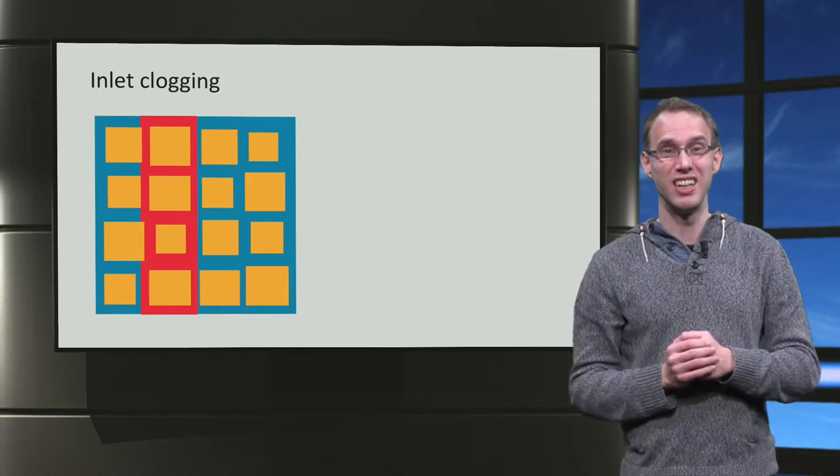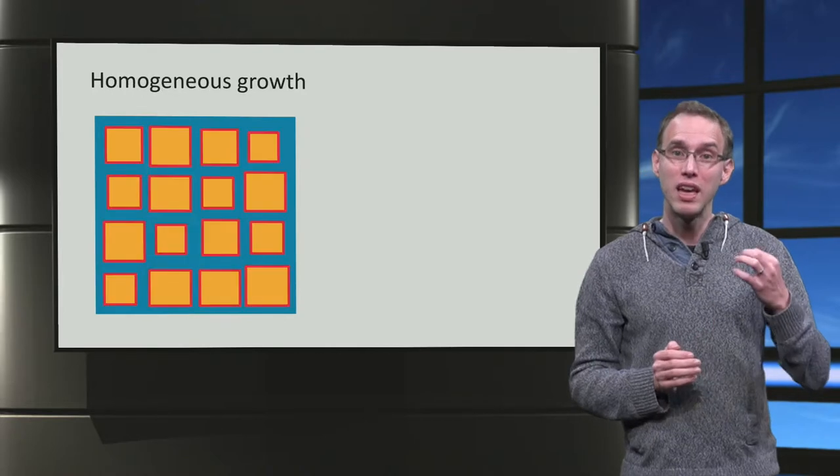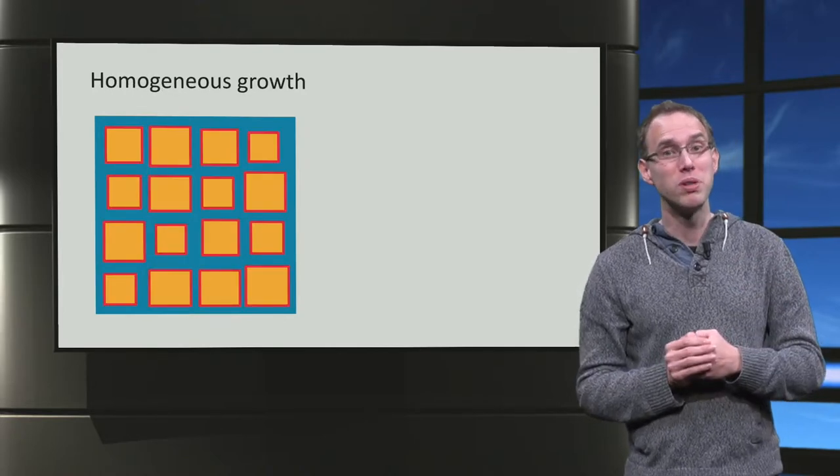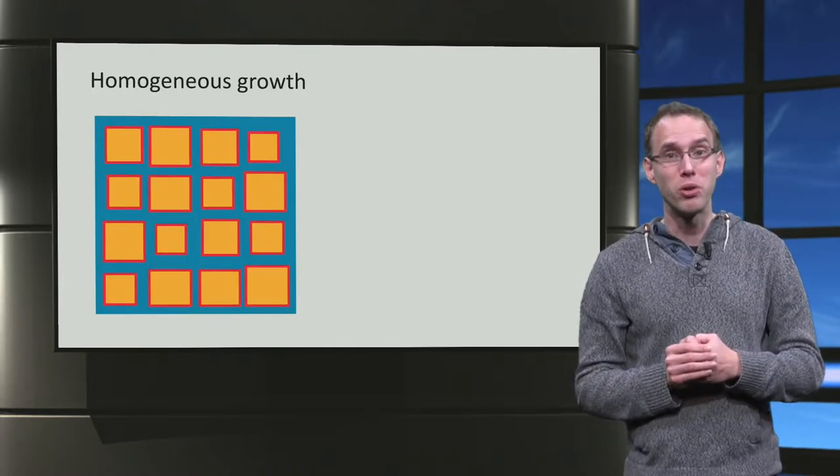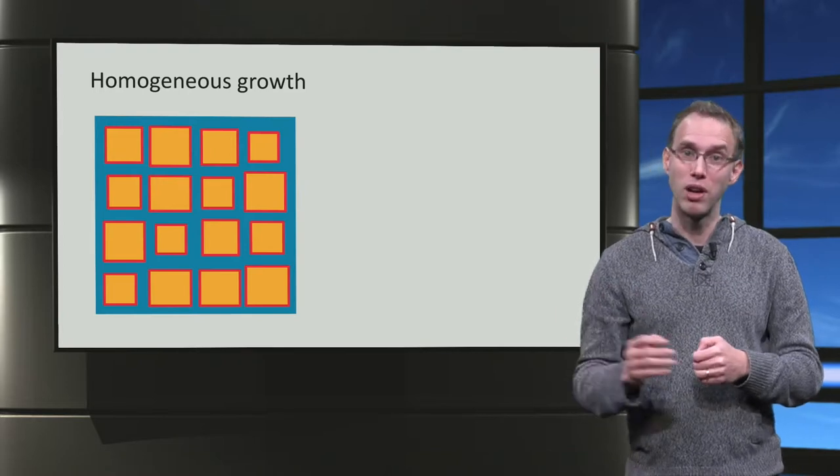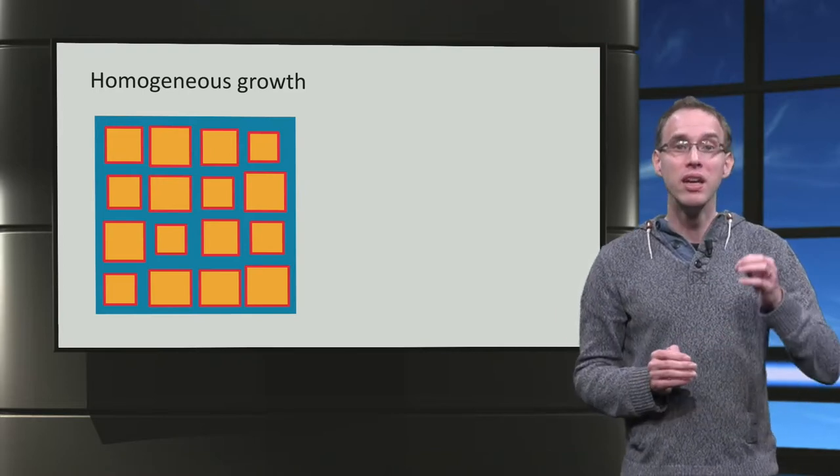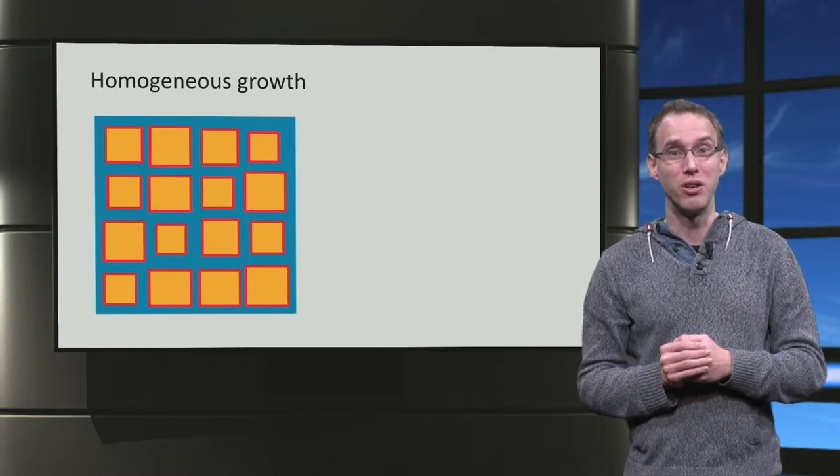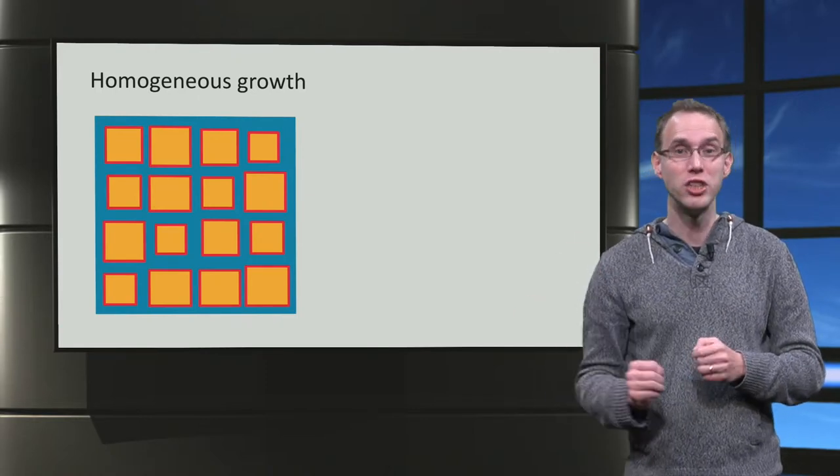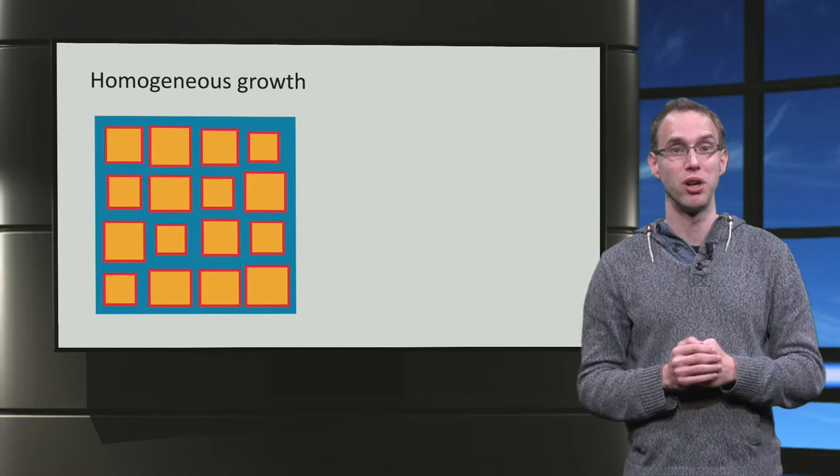A more homogeneous scenario is also possible, if biofilm grows in all tubes at the same rate. We will call this uniform growth and upscaling is possible. We will use a pore network model to investigate under which conditions we have homogeneous growth and heterogeneous growth.